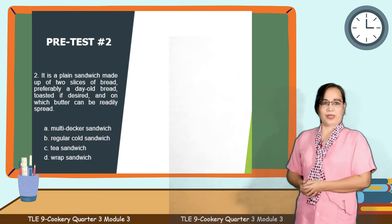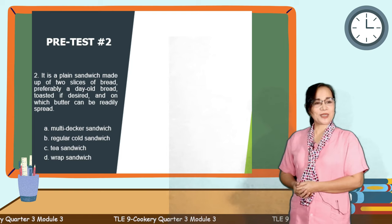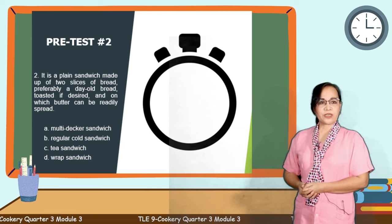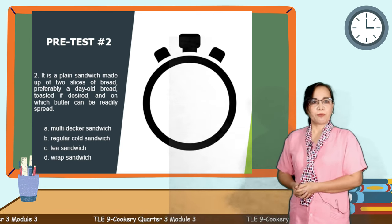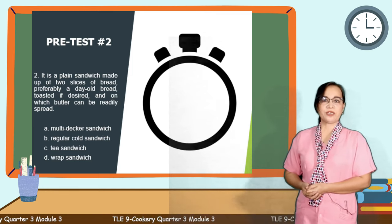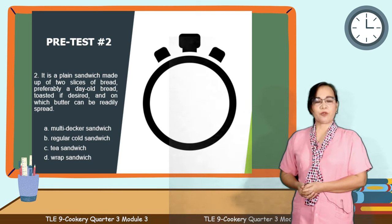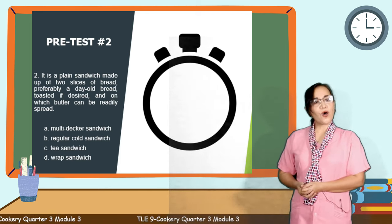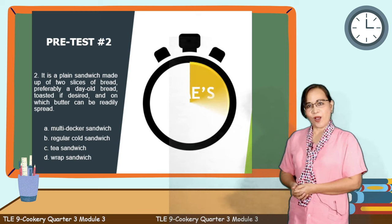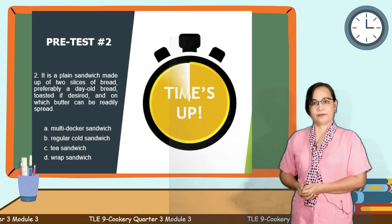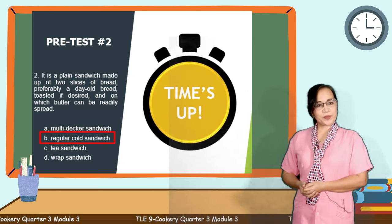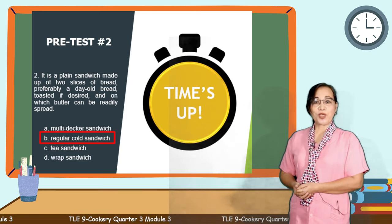Question number 2: It is a plain sandwich made up of 2 slices of bread, preferably day-old bread, toasted if desired, and on which butter can be readily spread. Is it letter A, multi-decker sandwich? Letter B, regular cold sandwich? C, tea sandwich? Or letter D, wrap sandwich? Your 5 seconds start now. Time's up! The answer is letter B, a regular cold sandwich. You are correct!